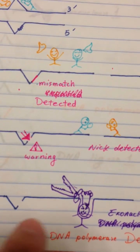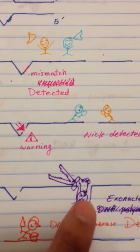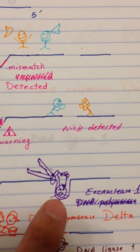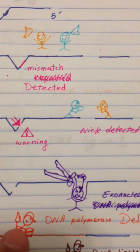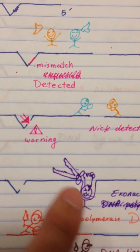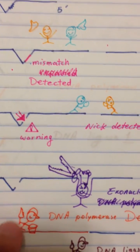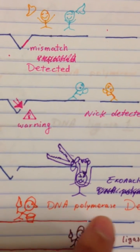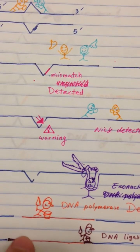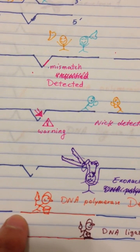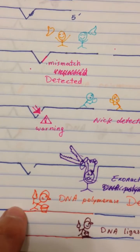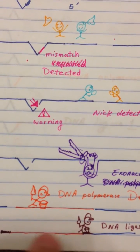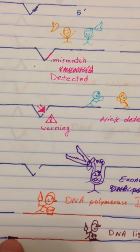...should be removed from the daughter strand. This is done by the action of this enzyme which is called exonuclease 1. So you see, it removes it, removes it as well. Finally, DNA polymerase delta fills in the missing part, and then DNA ligase ligates the two parts to the strand.